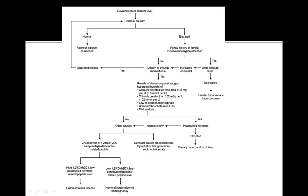Does the patient have chemistry suggesting hyperparathyroidism? For example: calcium elevated but less than 14.5 mg/dL, chloride greater than 102, low or decreased phosphate, chloride-to-phosphate ratio greater than 33, and mild acidosis — all these can suggest hyperparathyroidism. If that's the case, the parathyroid hormone is elevated and you may diagnose the patient with primary hyperparathyroidism.